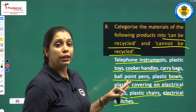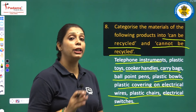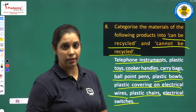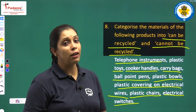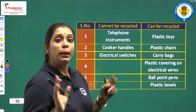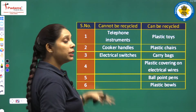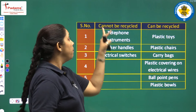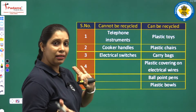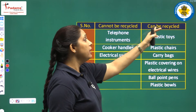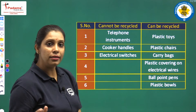Read them carefully and categorize which can be recycled and which cannot be recycled. We have to prepare a table with serial number, products that cannot be recycled, and products that can be recycled.